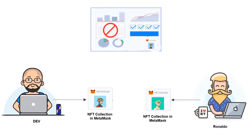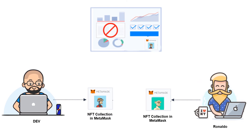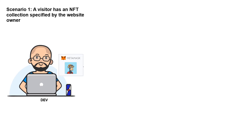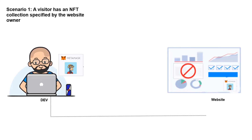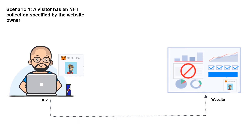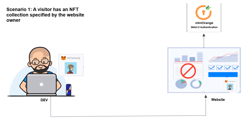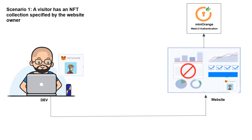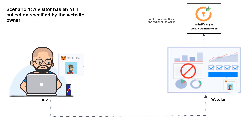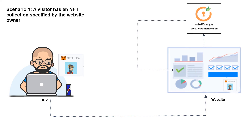As an example, in scenario 1, Dev is a visitor of the website. He logs into the website using MetaMask, which holds the required NFT collection specified by the website owner. The miniOrange Web 3.0 authentication plugin verifies whether Dev is the owner of the wallet. Once the ownership is verified, Dev will have access to the restricted content.